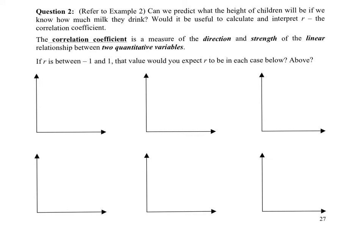This is very specific. The correlation coefficient is a measure of the direction and strength of a linear relationship between two quantitative variables. The correlation coefficient will always be between negative one and one, inclusive.